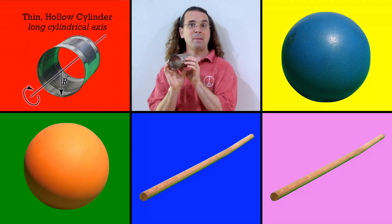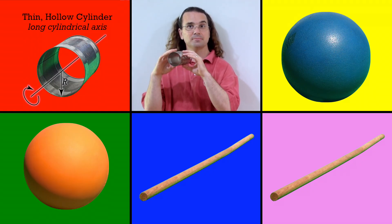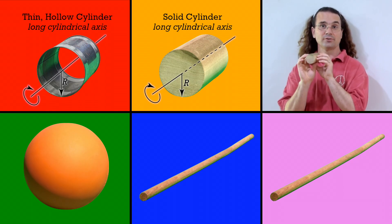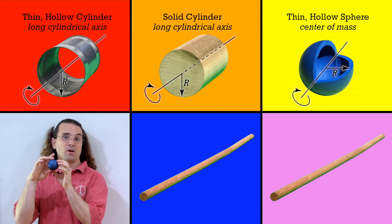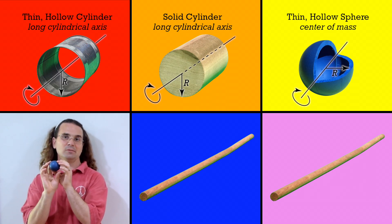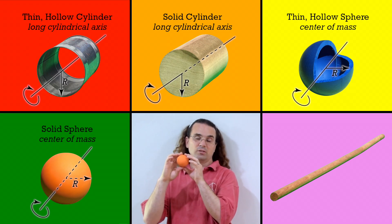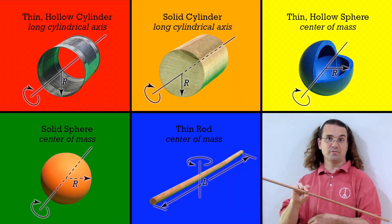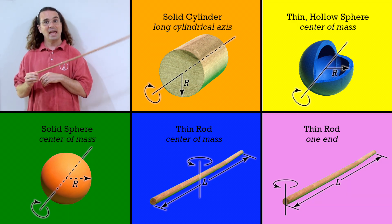The six objects are: a thin hollow cylinder about its long cylindrical axis, a solid cylinder about its long cylindrical axis, a thin hollow sphere about its center of mass — a racquetball — a solid sphere about its center of mass — a lacrosse ball — a thin rod about its center of mass, and a thin rod about one end.